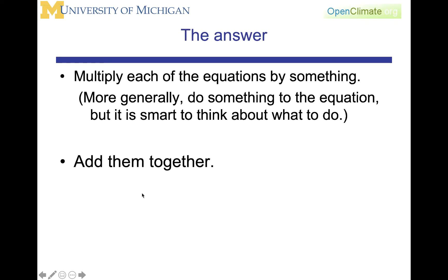The basic idea is that you're going to multiply each of the equations by something, but if you thought about that more generally, you can think of an operator. You can operate on those equations, it's smart to think about what you're going to do to it, and then you add them together. And when you do that, you have maintained the fidelity of the equations, and you might have a new way to look at what you have said in the equations.